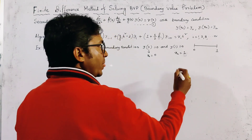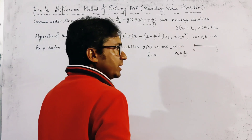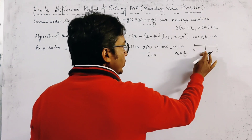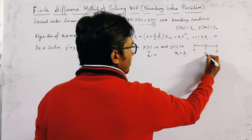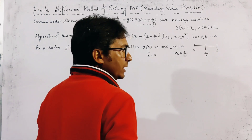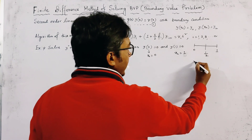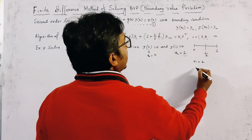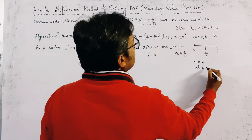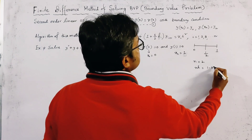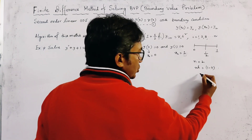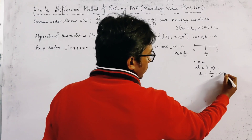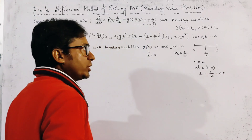If we divide this interval into 2 sub-intervals, we take a midpoint at 0.5, with n = 2. Then n·h = b − a = 1 − 0, so we get h = 1/2 = 0.5.